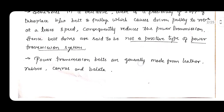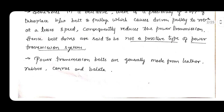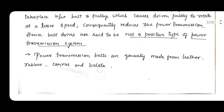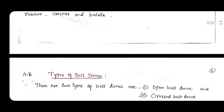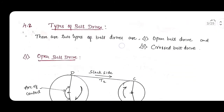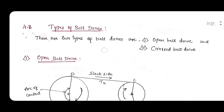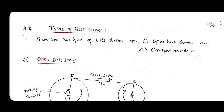Belts are generally made from leather, rubber, canvas, and balata material. These are the different materials used to create the belt. There are two types of belt drives: open belt drives and crossed belt drives.